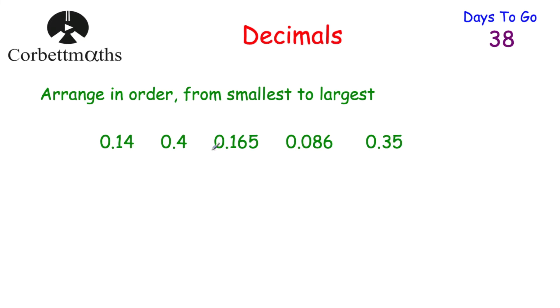So if we wanted to put these in order, there are a couple of ways we can do this. One way is to look at the ones or units column. All five numbers have a zero in the units column, so that's not going to help us find the smallest one.